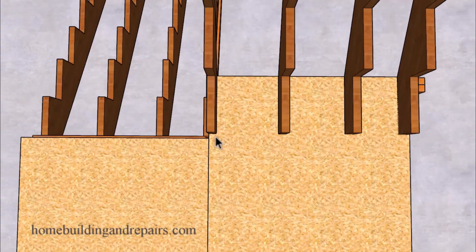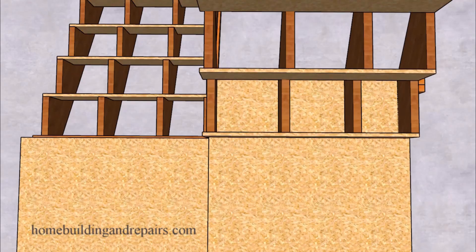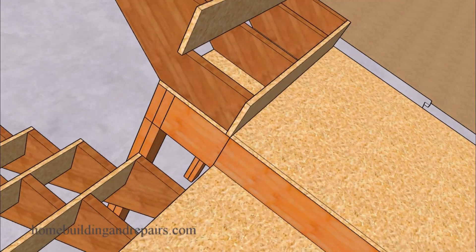Now another thing I want to point out is that the stringers are positioned to where there will be a straight line from the face of the lower riser to the face of the upper riser. That will make a little more sense when we take a look at it from the side here.